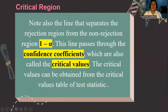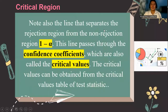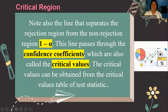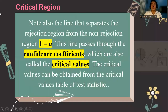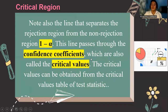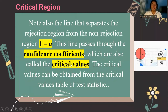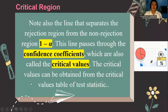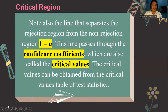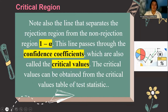Note also that the line that separates the rejection region from the non-rejection region is 1 minus alpha. This line passes through the confidence coefficients, which are also called the critical values. The critical values can be obtained from the critical values table of the test statistic.